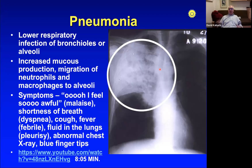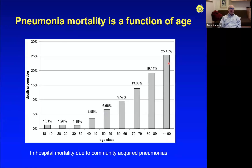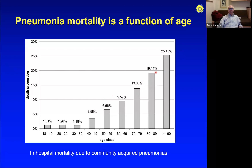Pneumonia mortality is strongly a function of age. In a developed country like the US, having pneumonia early in life is relatively benign — few people die unless they are immunocompromised or have pre-existing conditions that qualify them for vaccines. But by the time you're in your 70s and 80s, the lethality of pneumonia shoots way up. This pattern is very similar to what we see with COVID.